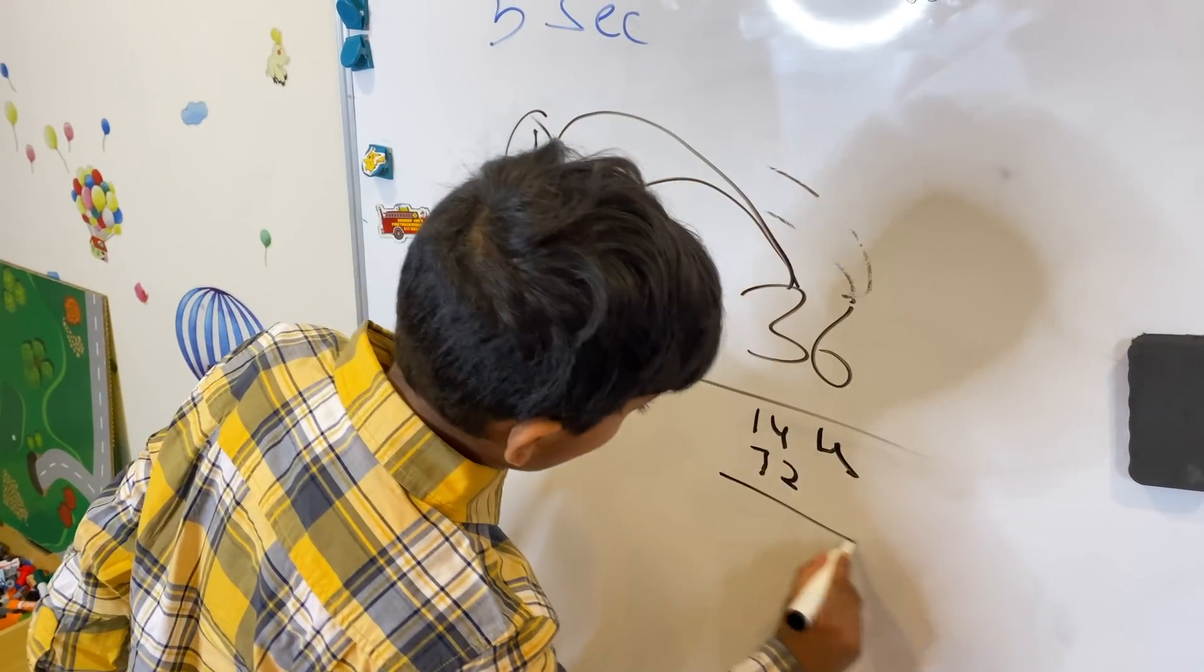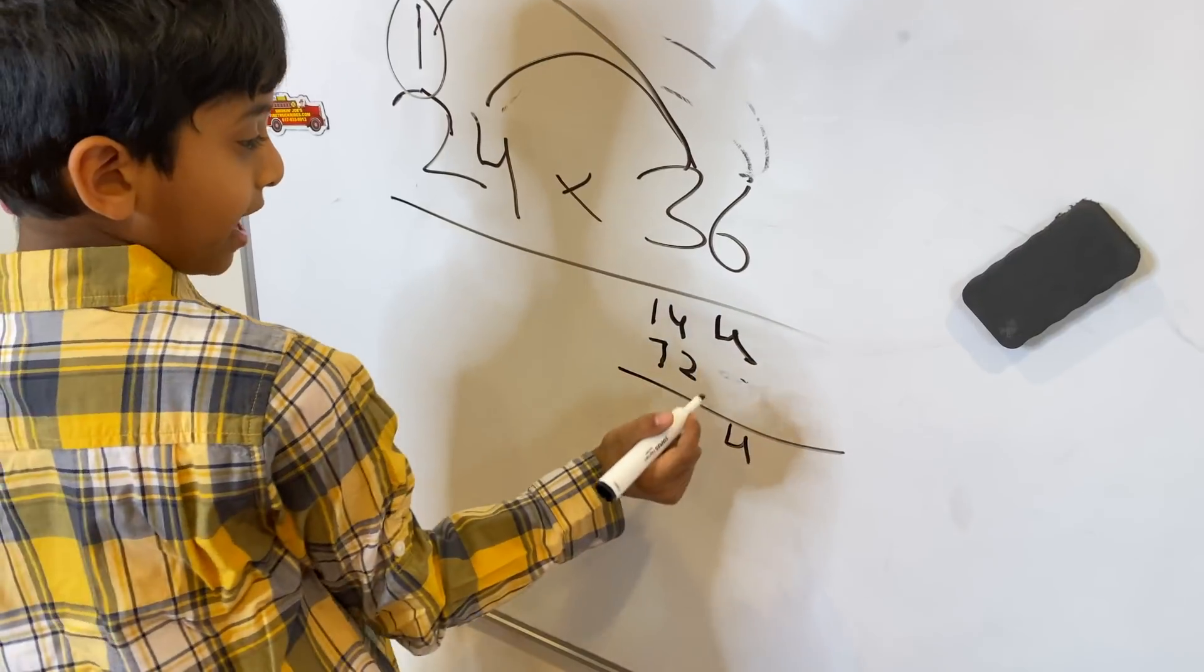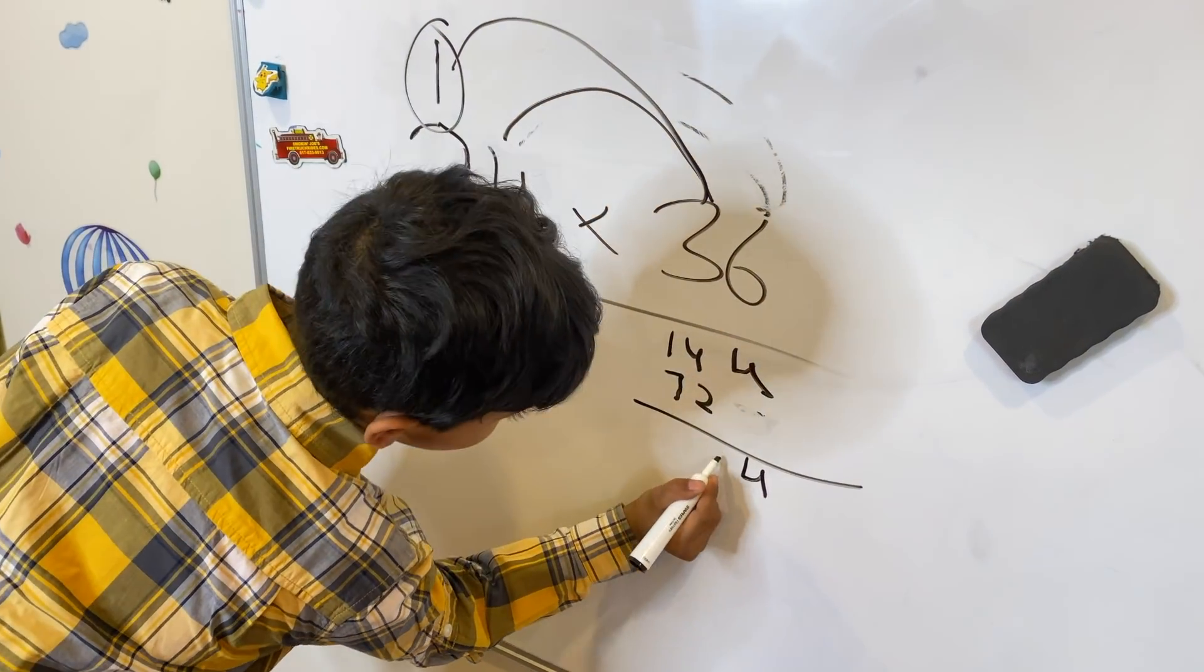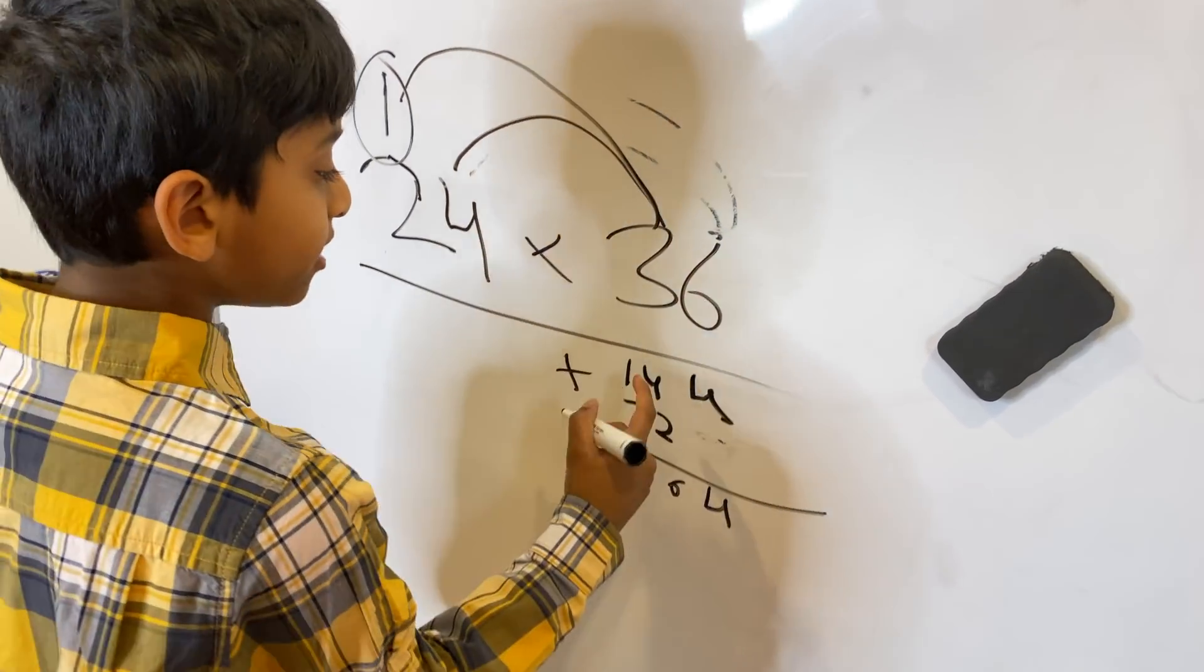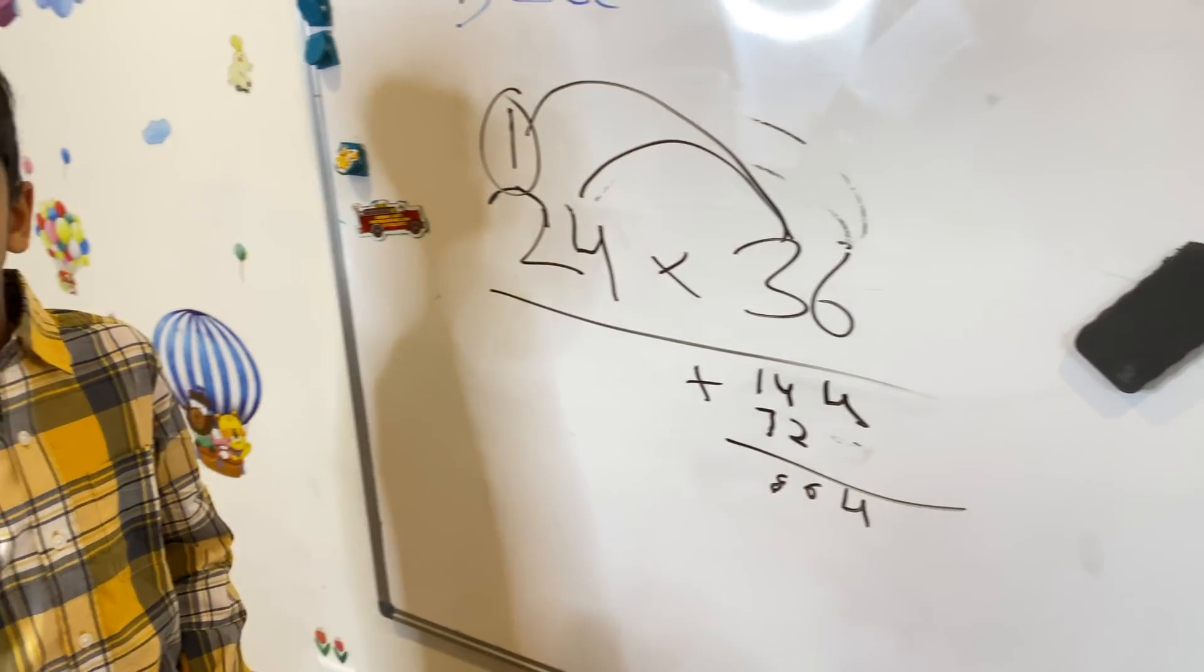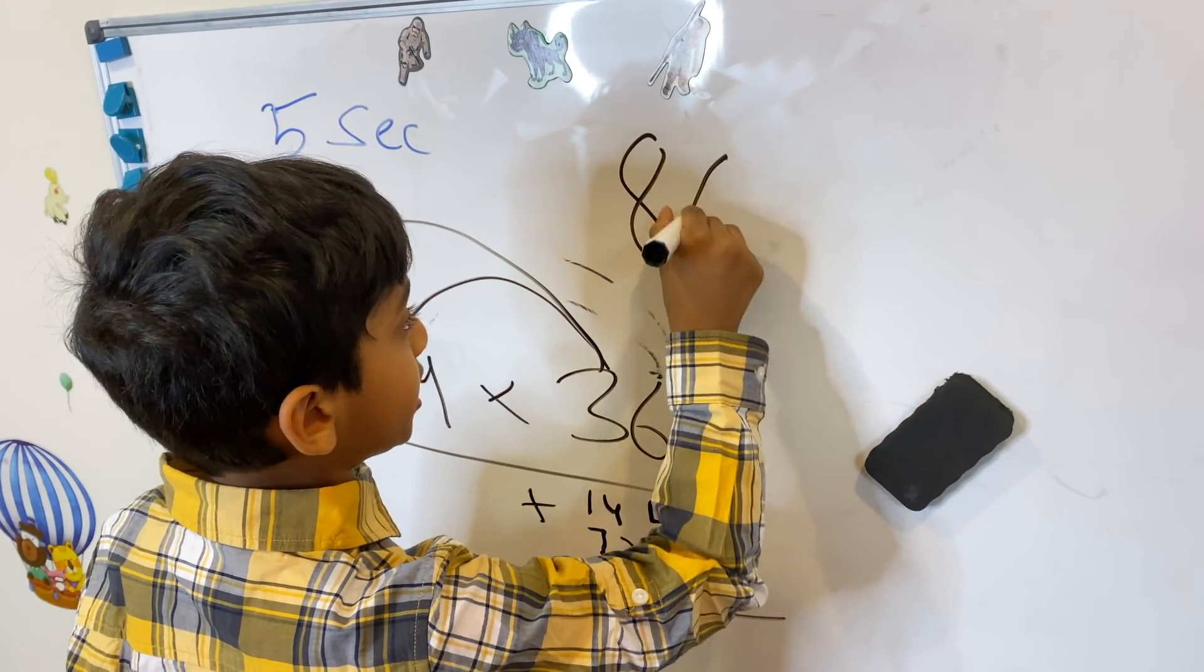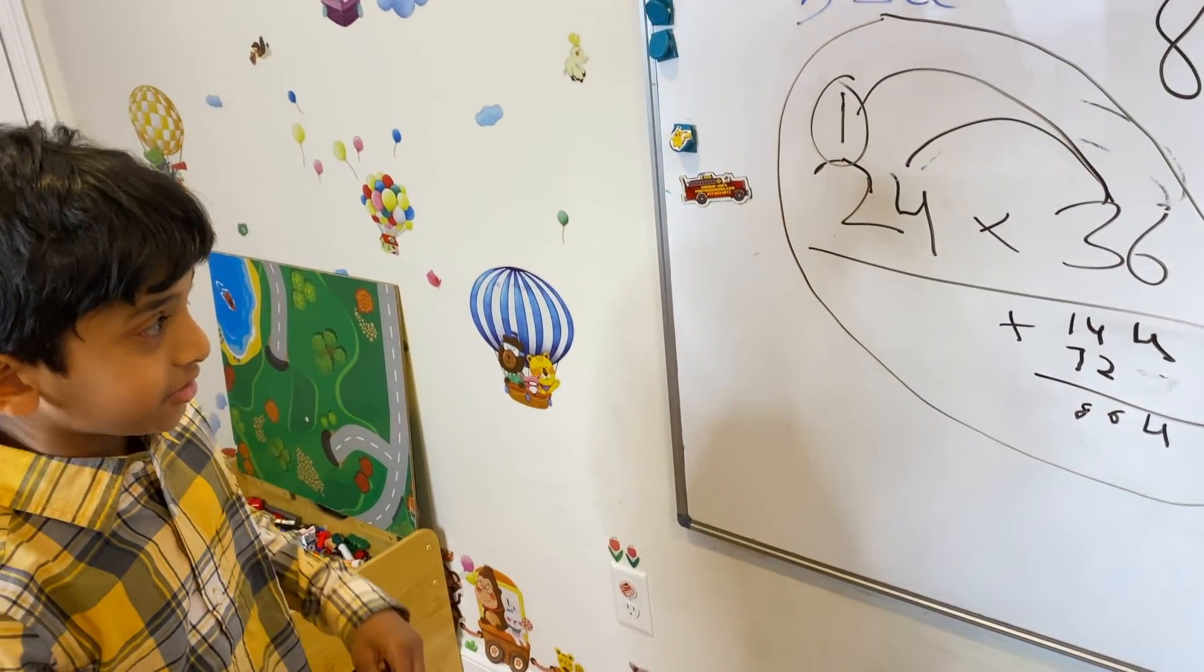And now let's add these together. Bring the 4 down because there's nothing there. Now we have to do 4 plus 2, which is 6. And now 1 plus 7 is 8. 864 is our answer. Let me write it neatly here. 864. See? Do you look at this? It's a long way to do this, right?